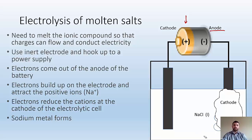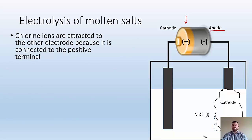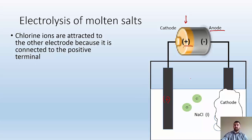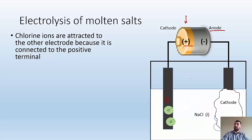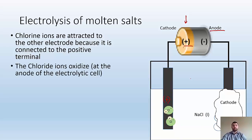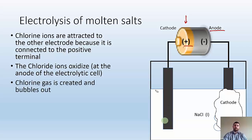What's happening at the other side? Chlorine ions are going to be attracted to the other side because it's the positive terminal of our voltaic cell. The positive extends to that electrode, attracting the negative anions. Our power source strips those anions of their electrons, so the chloride ions oxidize — that makes it the anode of the electrolytic cell. And the chlorine ions become chlorine gas, which bubbles out of the solution.